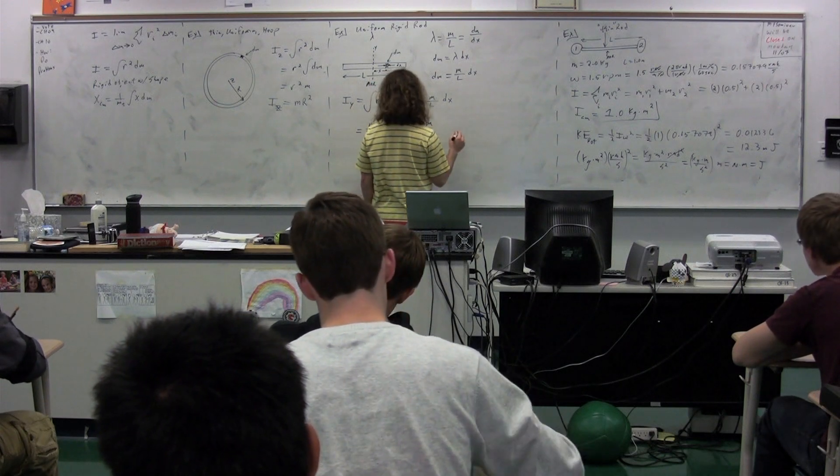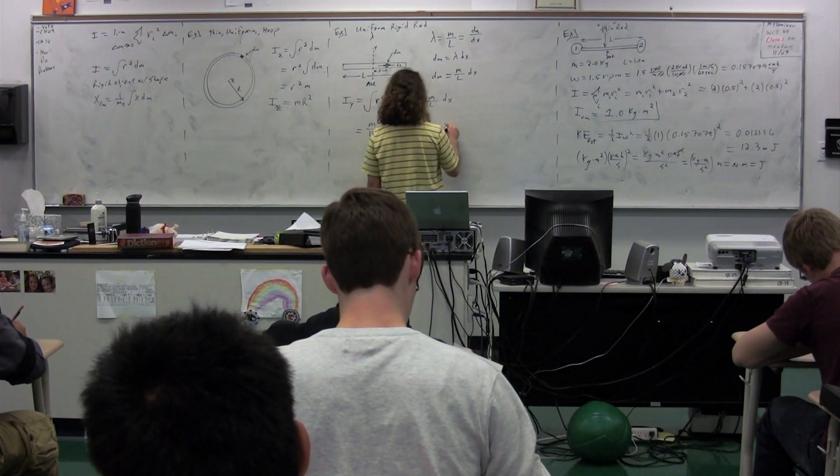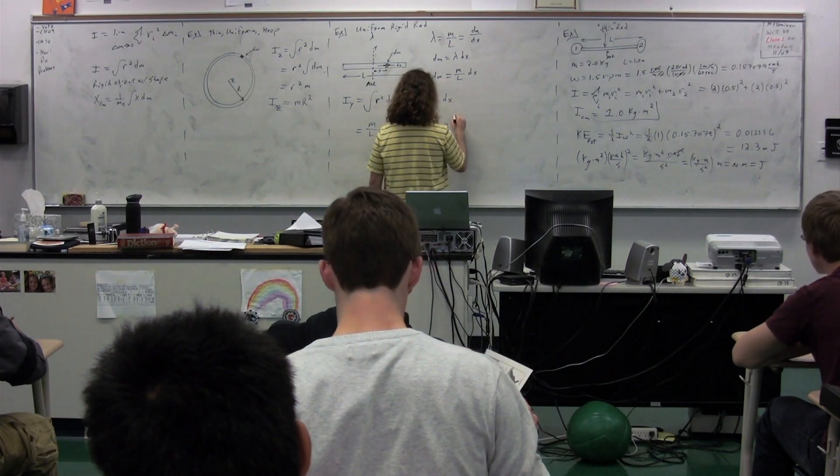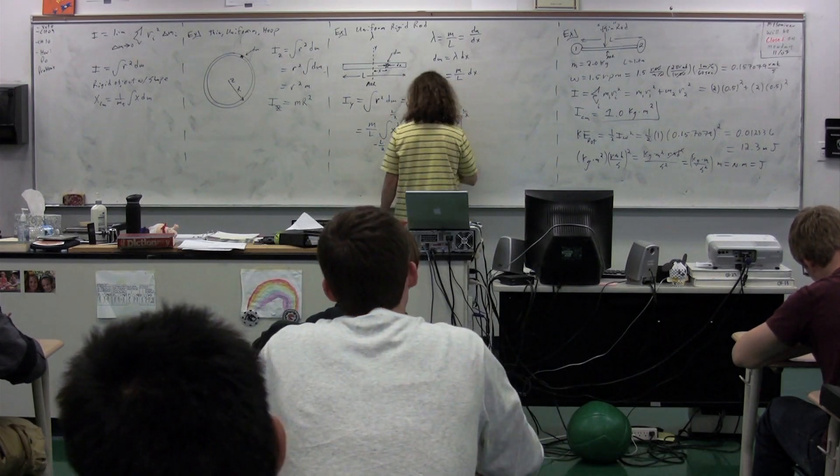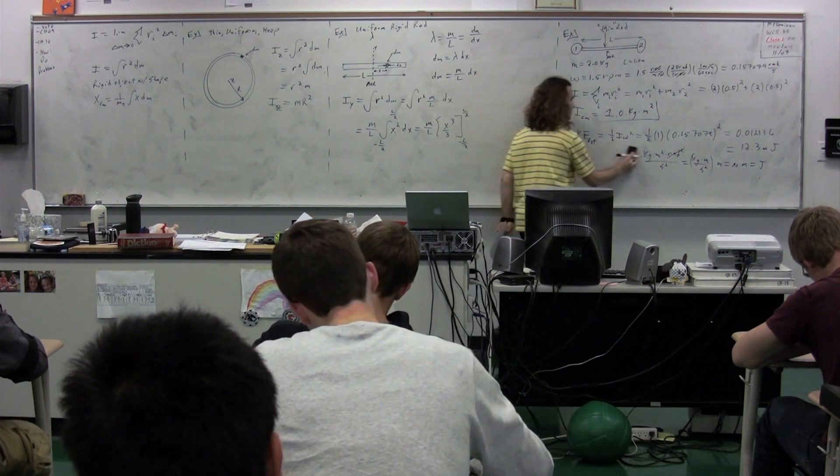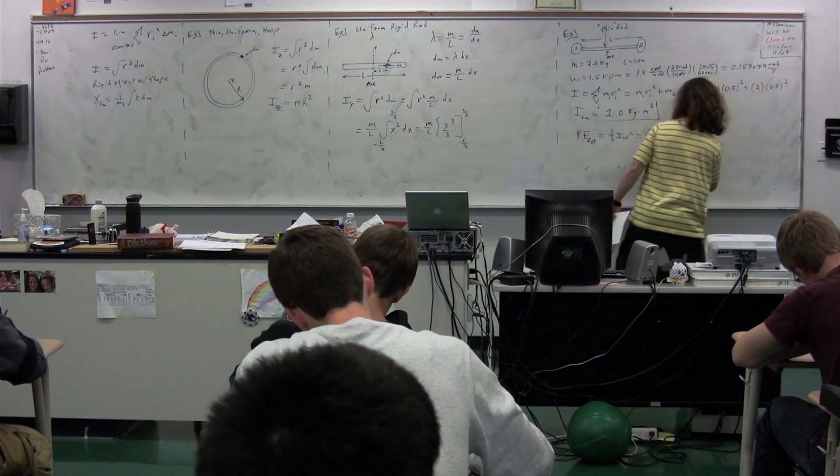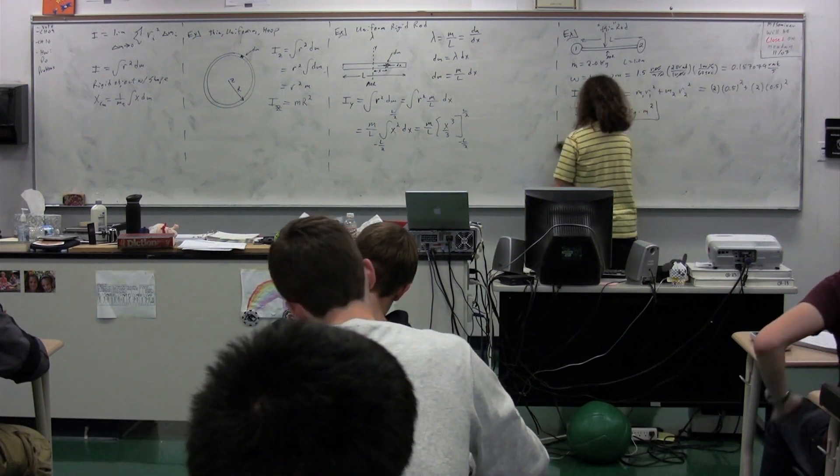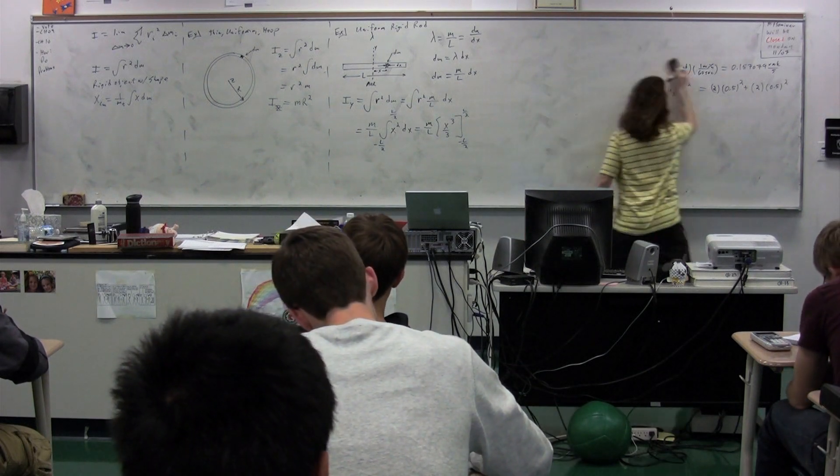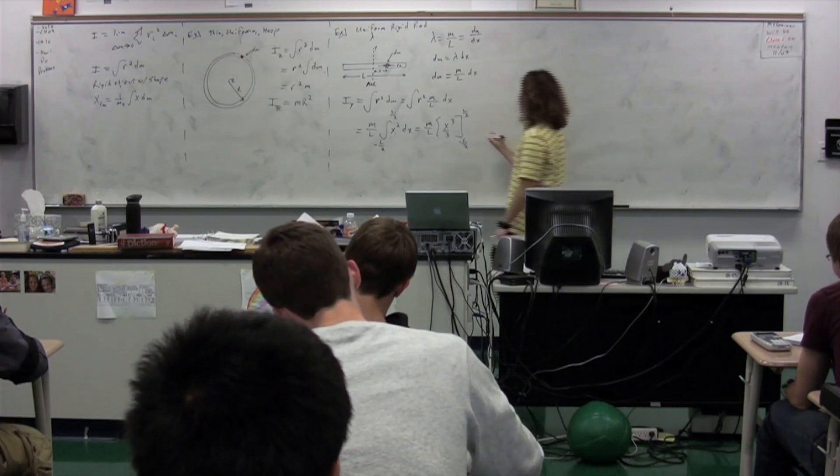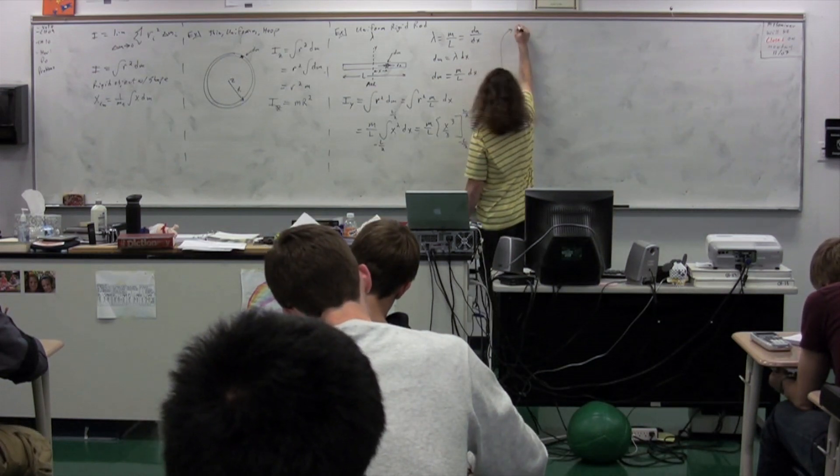We need to plug in all of the stuff here we have. The moment of inertia about the y-axis is equal to m over L times L over 2 cubed over 3, minus negative L over 2 cubed over 3.